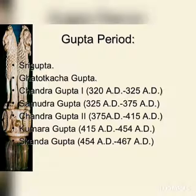The Mehrauli iron pillar inscription says that the king defeated the confederacy of Vangas and Vahikas. It was in Chandra Gupta II's time that the Chinese pilgrim Fahian visited India.